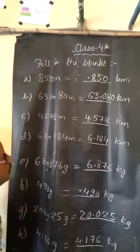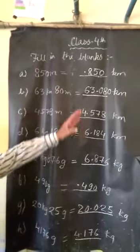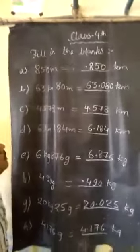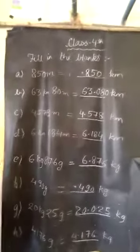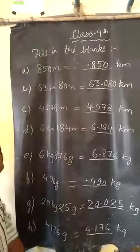1000. So, we put the decimal from right side 3 digits. So, we put the decimal after 3 digits. It will be 0.850 kilometers.